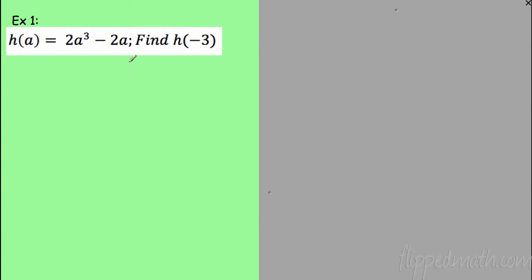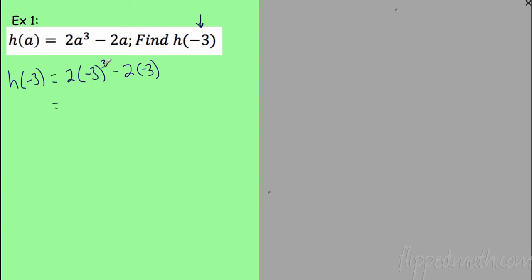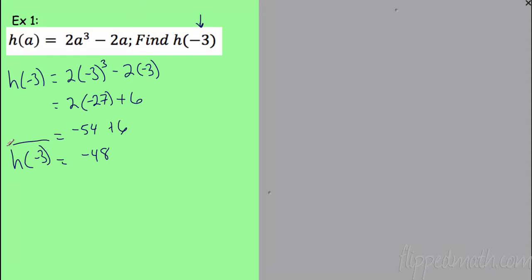Now we have h of a — the function h in terms of a. Wherever I see a, I plug in -3. So h(-3) = 2(-3)³ - 2(-3). Evaluating: (-3)³ = -3 × -3 × -3 = -27. Then 2 × -27 = -54, and -2 × -3 = +6. So -54 + 6 = -48. We write the answer in function notation: h(-3) = -48, meaning when I input -3, my output is -48.